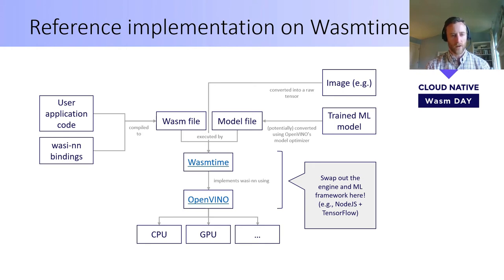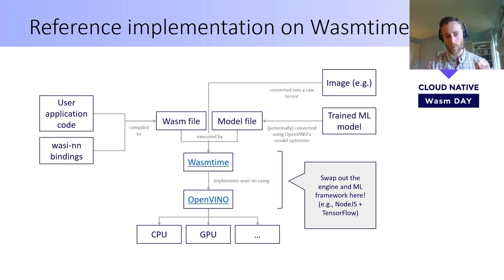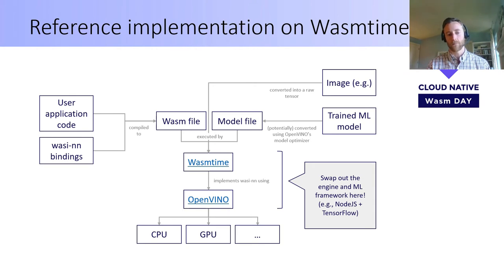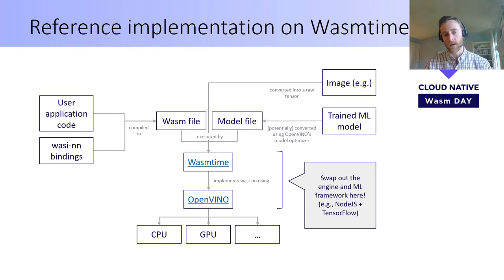WASI-NN is not tied to any specific WebAssembly engine or machine learning framework. We did have to start somewhere, so we used WASM time as the engine and OpenVINO as the machine learning framework. This diagram shows all the various components in our implementation. Starting on the left, you'll see the user application code, which when tied together with the WASI-NN bindings can get compiled down to a WebAssembly file. That file will use tensor inputs — for example from an image — and the model files, passing those on to the engine WASM time. WASM time provides the WASI-NN implementation and proxies machine learning calls down to OpenVINO, which executes them on a CPU or GPU. These middle components — the engine and the machine learning framework — can be swapped out for different implementations.